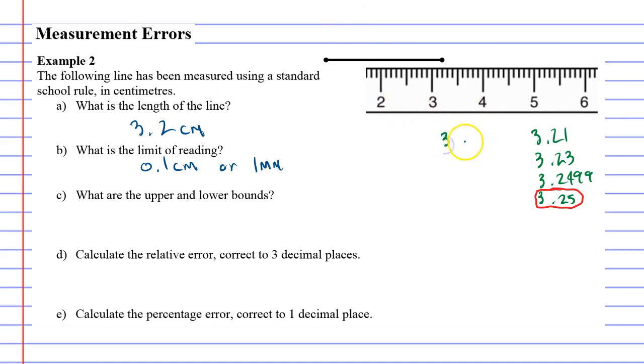Okay, so it could have been 3.19, which would measure as 3.2. 3.17, even as low as 3.15, that would also measure as 3.2 centimeters.